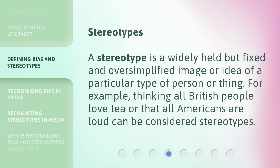Stereotypes. A stereotype is a widely held but fixed and oversimplified image or idea of a particular type of person or thing. For example, thinking all British people love tea or that all Americans are loud can be considered stereotypes.